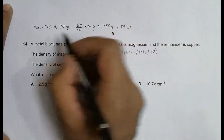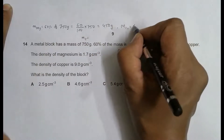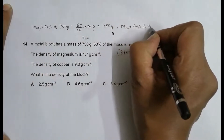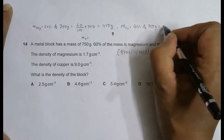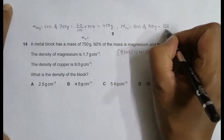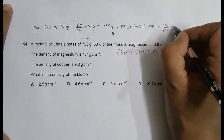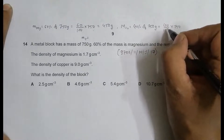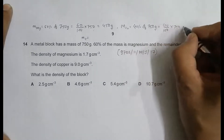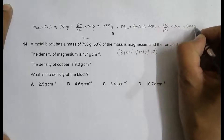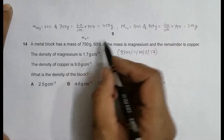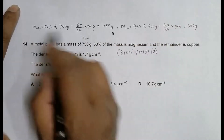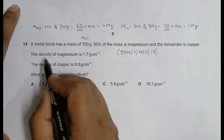The mass of copper is the remaining 40%, since 100 minus 60 equals 40. So it is 40% of 750 grams, equal to 40 divided by 100 multiplied by 750, which gives 300 grams. So the masses of copper and magnesium are 300 grams and 450 grams respectively.